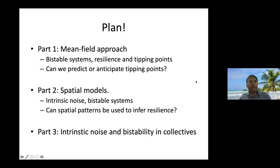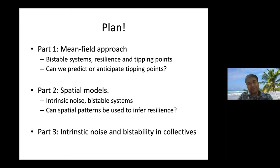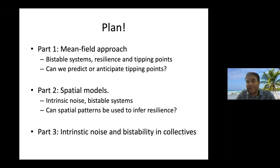The three parts of my talks are planned this way. In the first part today, I'm going to talk about what we call the mean field approach. I'll look at how we understand ecological systems with bistability using mean field approaches. The specific aim for today: can we predict or anticipate tipping points in ecological systems using these mean field approaches? The main motivation is bi-stability, which gives rise to something called tipping points.